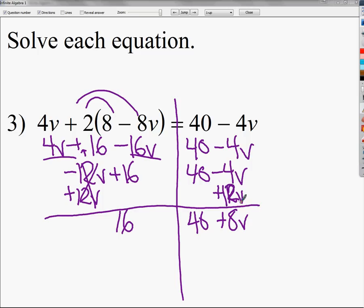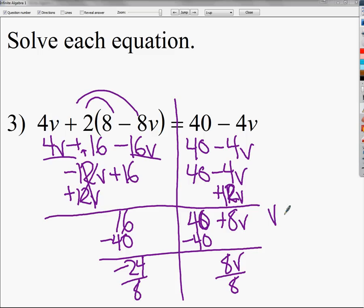Now that party's over. This is a 40, not a 46. So I need to subtract 40 from both sides. And I do 16 minus 40 and I get negative 24. Bring down my 8v. Now I'm left with the final step, the finish it step. To get rid of 8 times v, I need to divide. So my final answer is negative 24 divided by 8, or v equals negative 3.